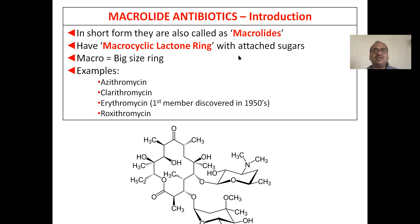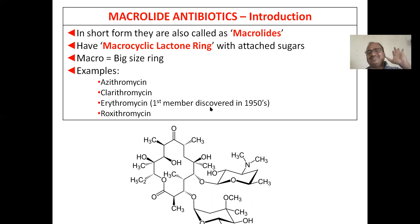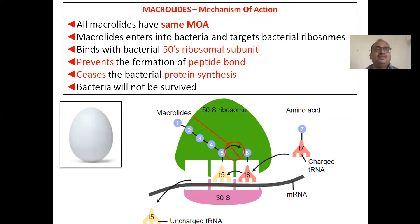The macrocyclic lactone ring has two additional rings attached to sugars. Macro means a big-sized ring. The first discovered macrolide is erythromycin, isolated in the 1950s.